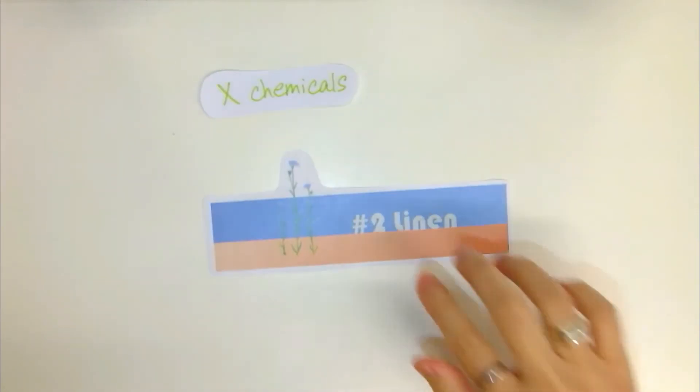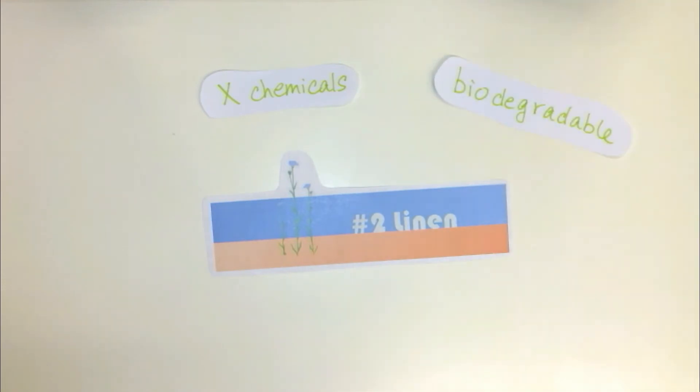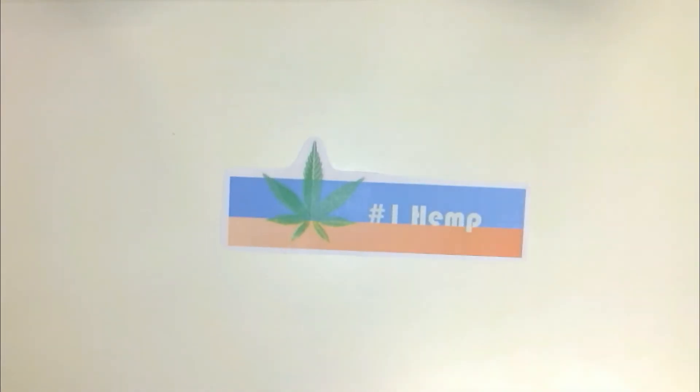Number 2: Linen. It requires no chemicals for growth at all. This fiber is also biodegradable. What's so special about this fabric is that it's very strong, which makes the clothing products last longer than those with other materials.